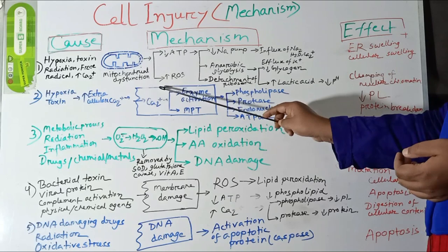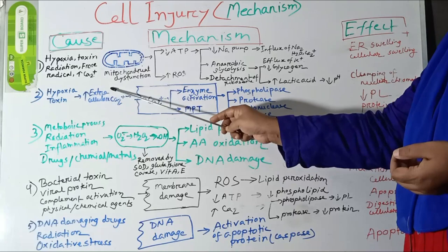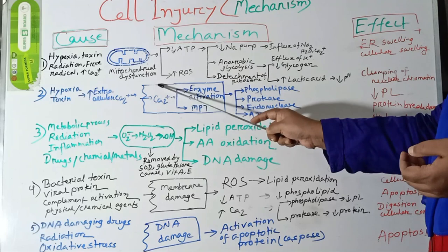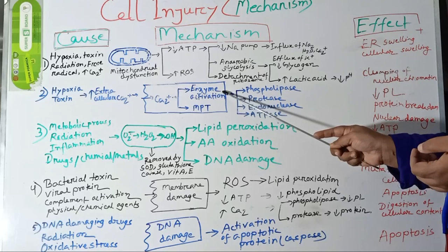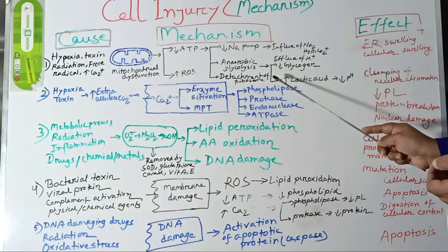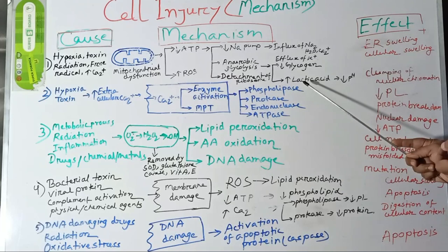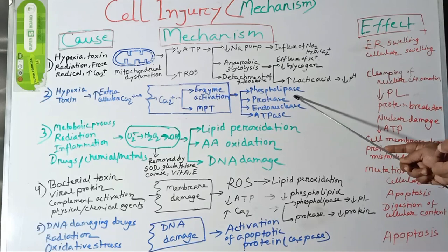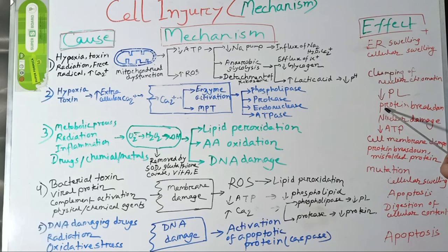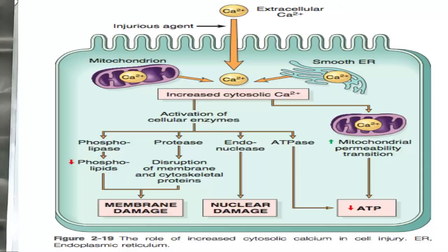Another mechanism of cell injury is loss of calcium homeostasis. Decreased ATP synthesis causes failure of the calcium pump, so extracellular calcium enters the cell. These accumulated intracellular calcium levels cause activation of various enzymes and opening of the mitochondrial permeability transition pore. Enzymes activated include phospholipase, which degrades membrane phospholipids; protease, which breaks down cytoskeletal proteins; endonuclease, which causes nuclear damage; and ATPase, which causes ATP depletion.